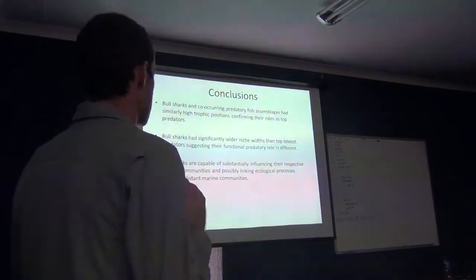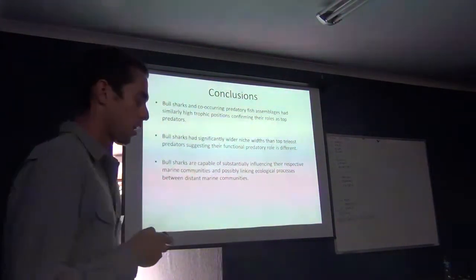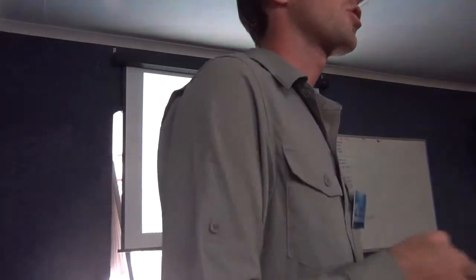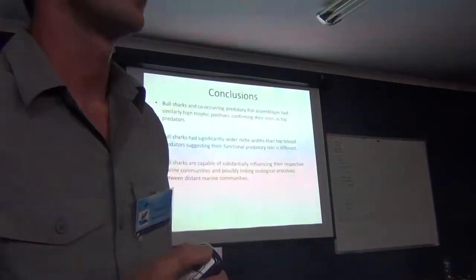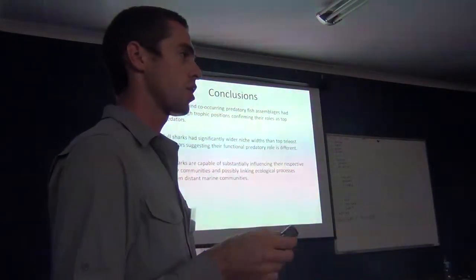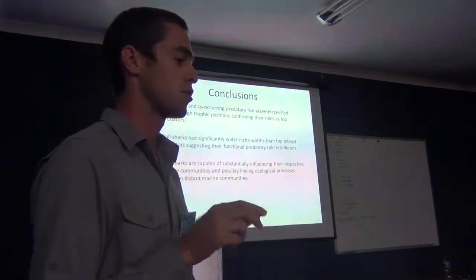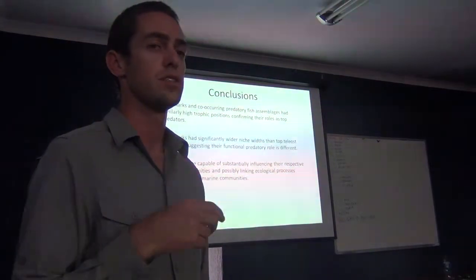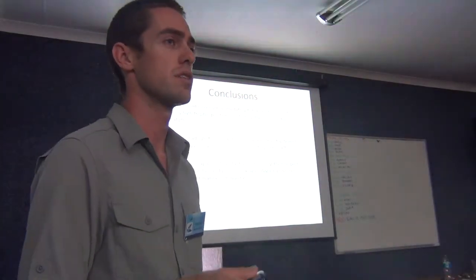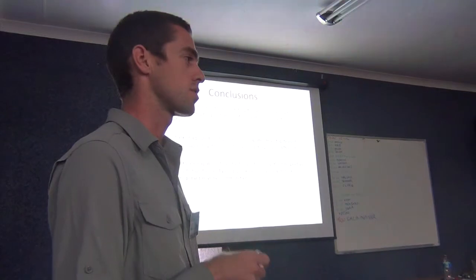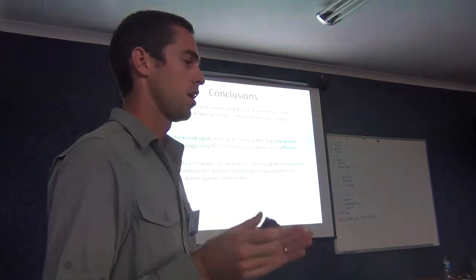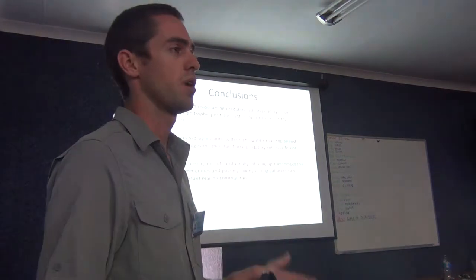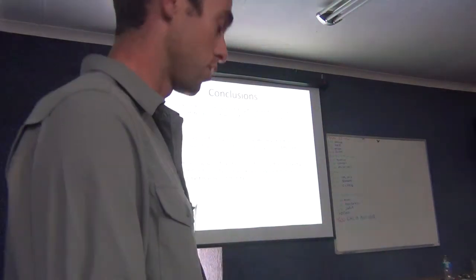This may be important when considering how top predators influence their respective communities. Large shark species such as the bull shark may be exceptionally important, not only in shaping their respective marine communities, but also in linking processes between geographically distant marine communities — unlike top predatory teleost species, which appear to have a more limited dietary menu and influence on their community.